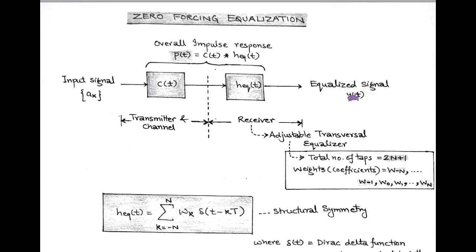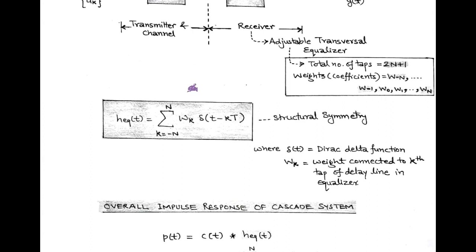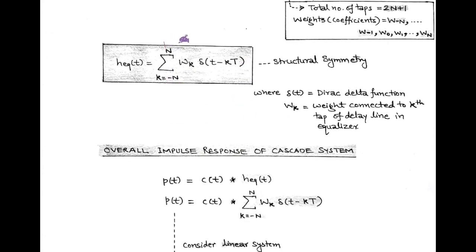So for zero forcing equalization, we consider a cascaded system and the overall impulse response of this cascaded system is the convolution of C(T) and H(T), denoted by P(T), that is called pulse shaping function. Also, for transversal filter at the receiver, we consider structure symmetry and it is equivalent to summation WK delta(T minus KT), taking limit K equals minus n to plus n.